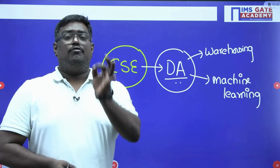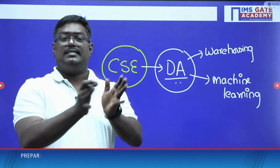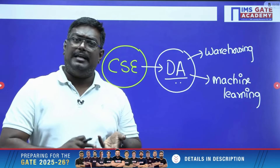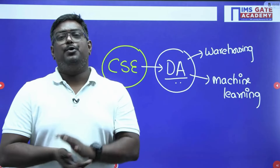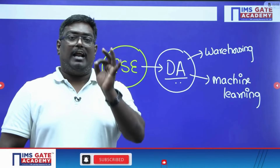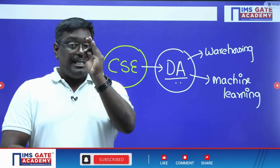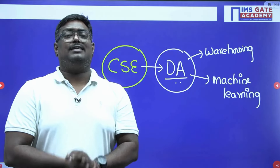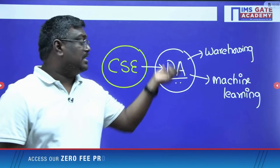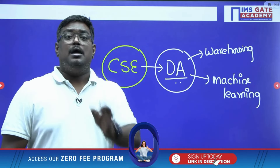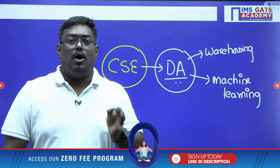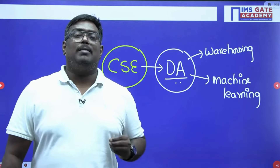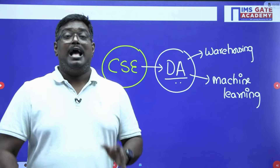To conclude: for civil engineering, the best option is XE. For mechanical, XE paper — choosing thermal, material science, fluid mechanics, or solid mechanics — and production are both good options. For electrical and EC students, instrumentation is the best option; if you want to write CS, make it the primary paper. For computer science students, data science and artificial intelligence is the best second option, with four to five common subjects: programming, data structures, algorithms, database management, and some mathematics topics.